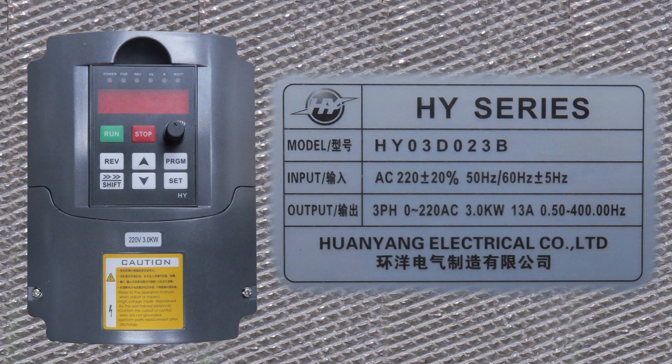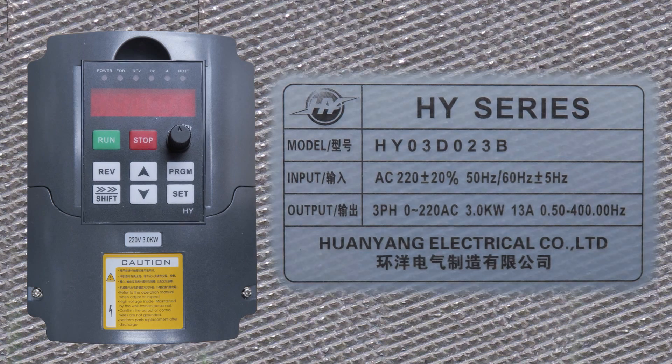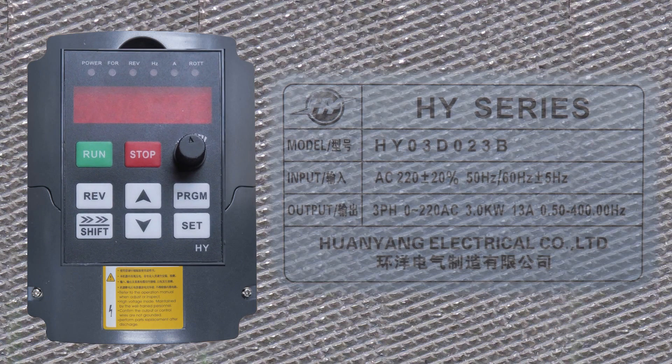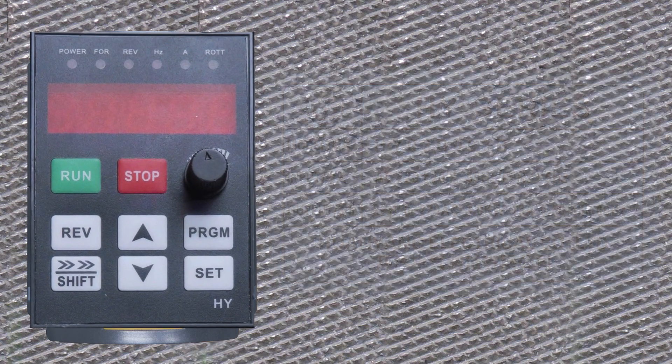Nyt sitten ruvetaan asettelemaan parametreja. Musiikkina tällä kertaa soi Scott Joplinin Ragtime-musiikki – koittakaa nauttia. Tässä on Huanyang-merkkinen taajuusmuuttaja. Ohessa myös sen mallikilpi. Tämä ohje saattaa toimia muillekin malleille, mutta ohje on testattu vain tällä mallilla.